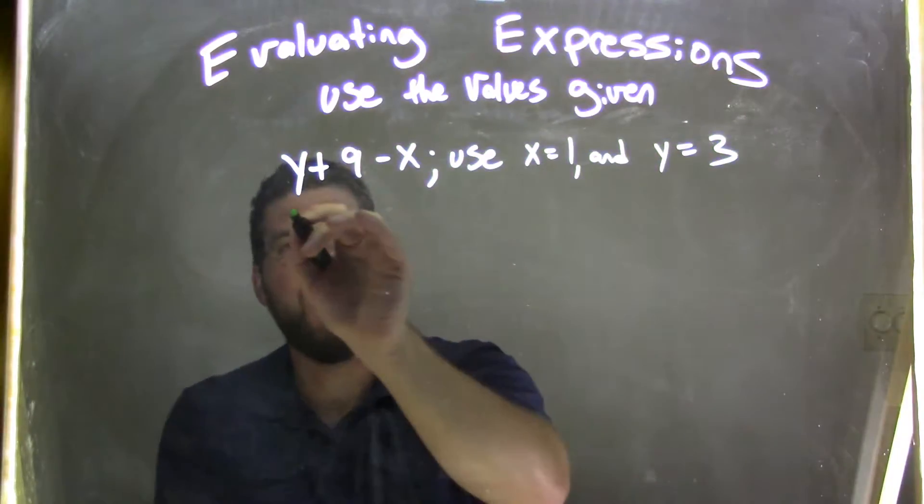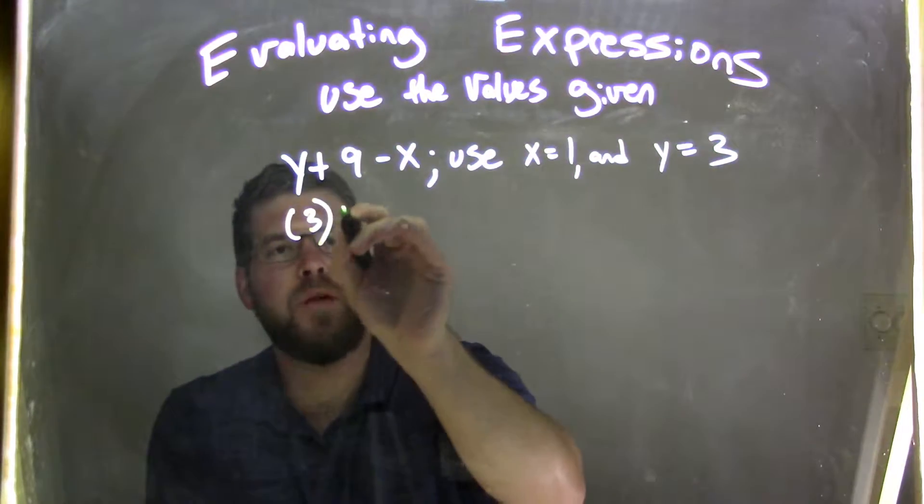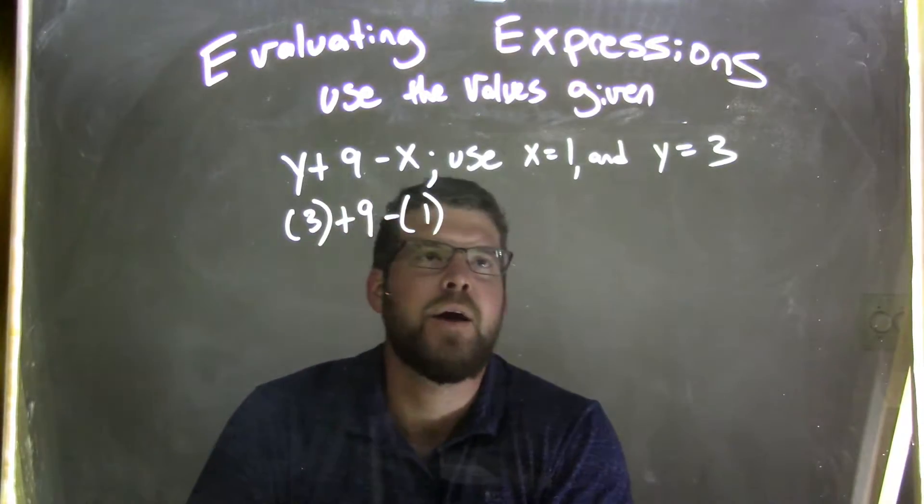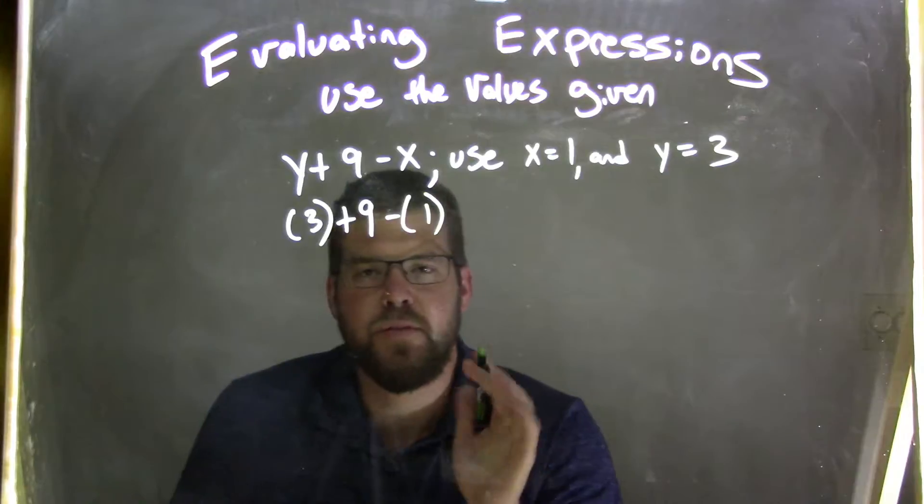So, let's do 3 first. Wherever I see a y, I put a 3, I put parentheses around it, 9, minus x to be 1. So, now, again, I'm putting parentheses around 1.